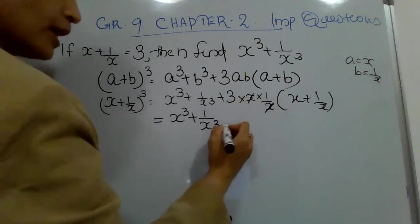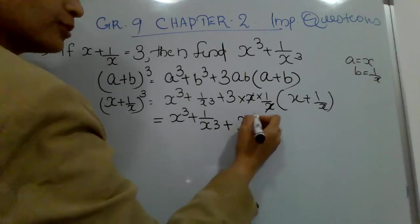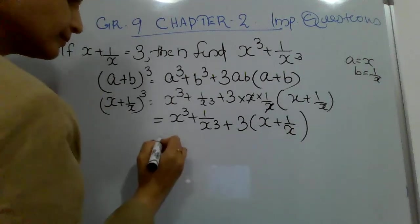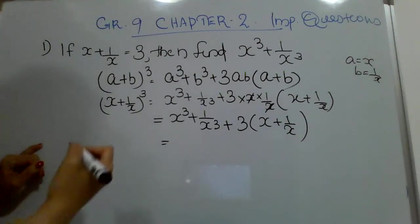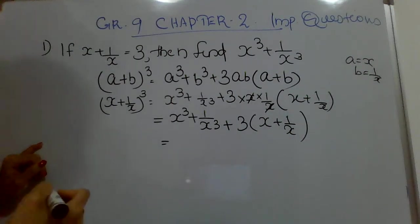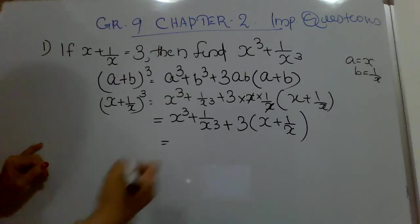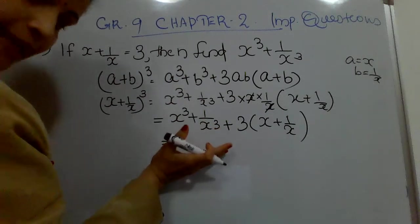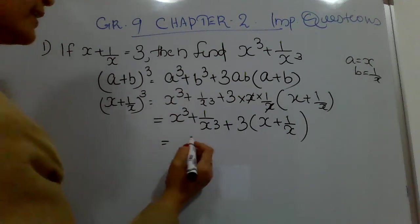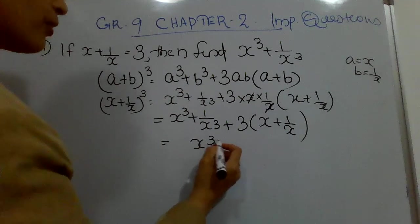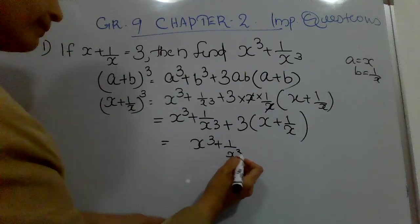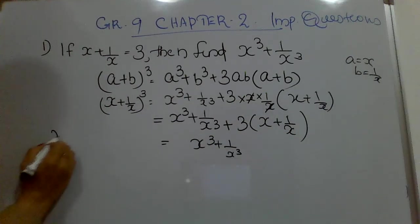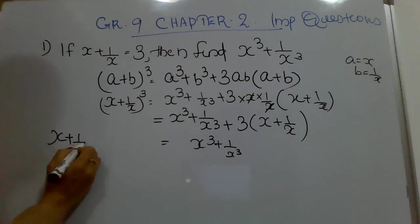On the right side, we have x³ + 1/x³. The x and 1/x cancel, leaving plus 3 × (x + 1/x). Since we need to find x³ + 1/x³, keep it on the right side.